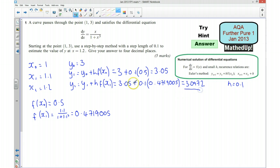And there you go. That's actually our answer. So we've used Euler's step-by-step method with a step length of 0.1 to estimate the value of y, which is here, when x is 1.2.